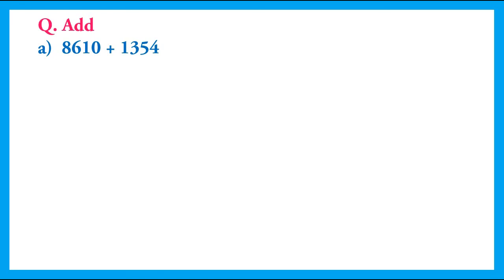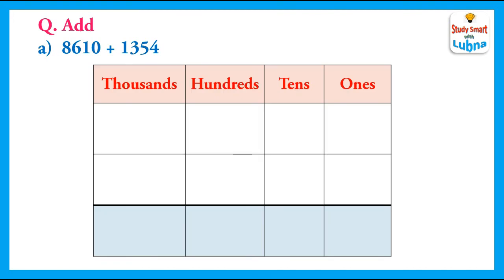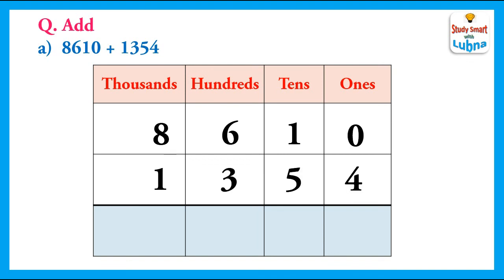Another question. We have to add 8610 and 1354. We write these 4-digit numbers below their place values: 8610 and 1354. We will add them. First of all, we will add the ones. 0 plus 4 equal to 4. We write 4 in the ones column.